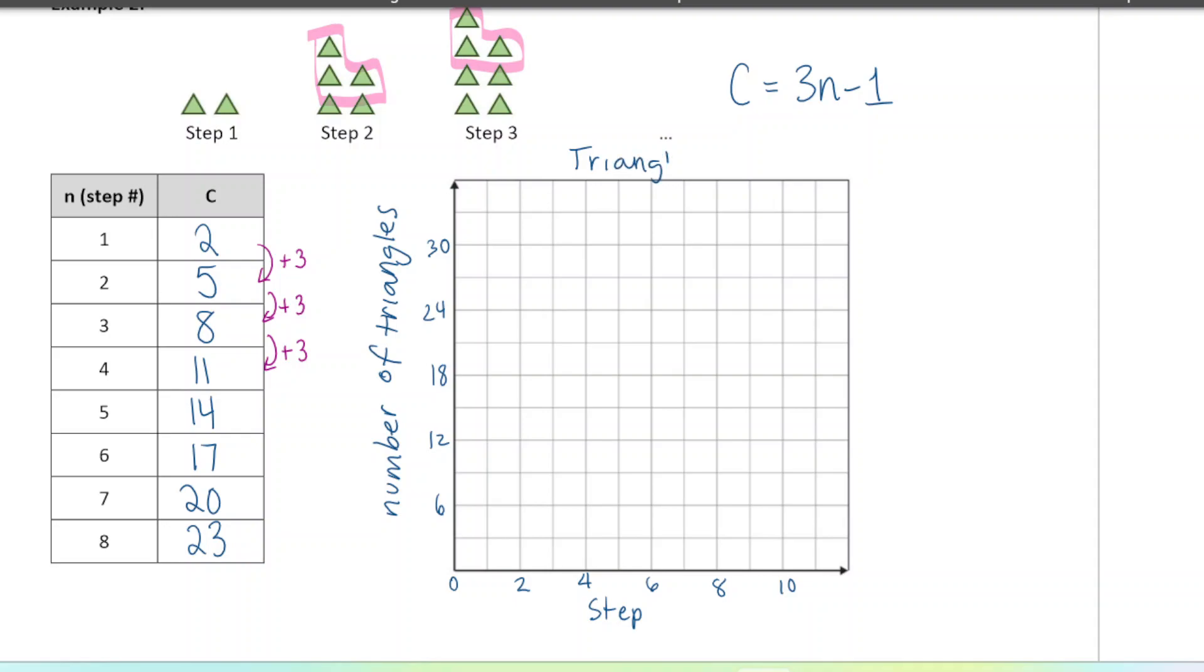At step one, we have two, which is a little bit less than three. At two, we have five, which is a little bit less than six. And then we have eight, then 11, then 14. So again, we can see here that these points are going up in a consistent way in a straight line. So this is a linear pattern because the points are in a nice straight line and the values are increasing by a consistent amount.